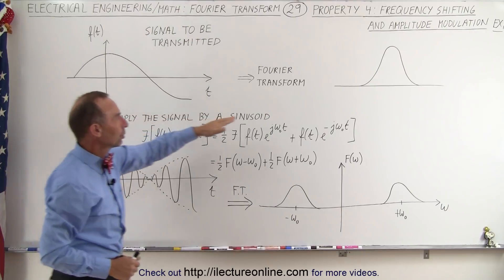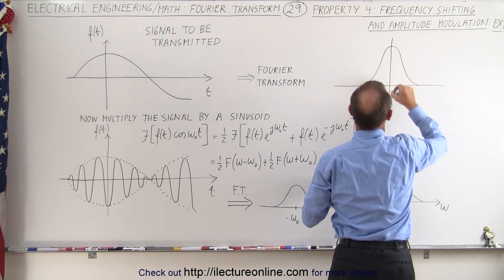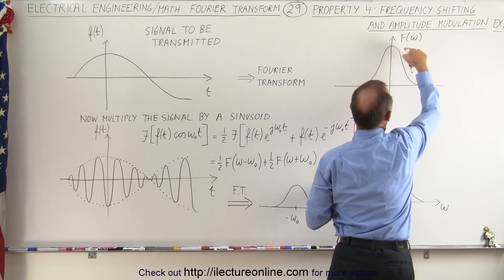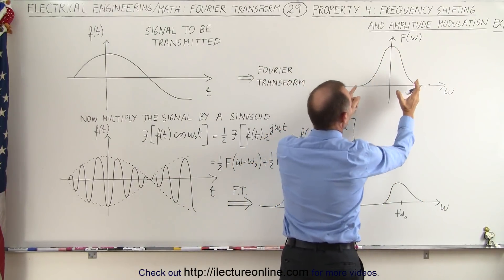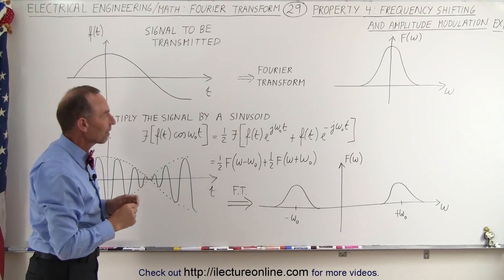And so the Fourier transform will look something like this in the frequency domain. So let's go ahead and put the vertical axis in there. So that would be the Fourier transform. This would be the frequency. You can see it has a certain amplitude and certain width and that's the signal that's going to be broadcasted or transmitted.